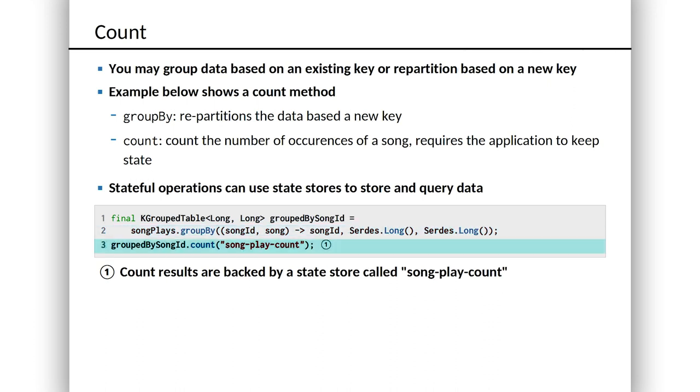And that new k-grouped table exposes a new method called count, and this is going to allow us to count the unique occurrences of each key. Now count seems simple enough. It's a table of grouped things. Go ahead and count the things. You might wonder why we have to pass in a parameter. That's the name that this piece of state should have in the internal state store. So this is a stateful operation, and that's fairly intuitive.